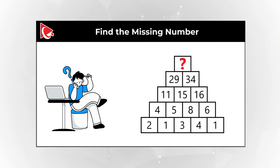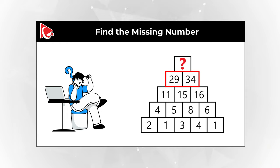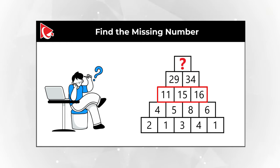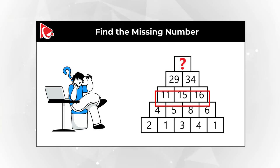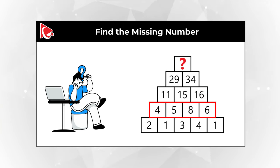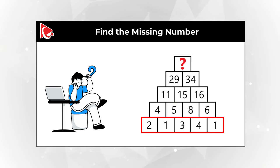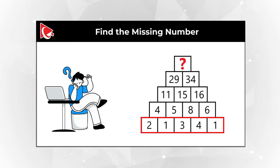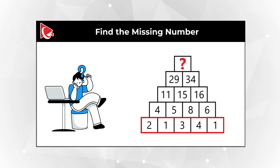If you go down, the second row contains numbers 29 and 34. The next row contains numbers 11, 15, and 16. The following row has numbers 4, 5, 8, and 6. And then the last row has numbers 2, 1, 3, 4, and 1.